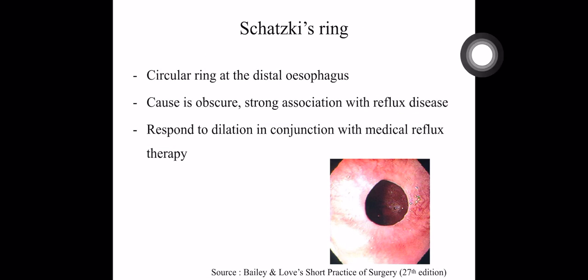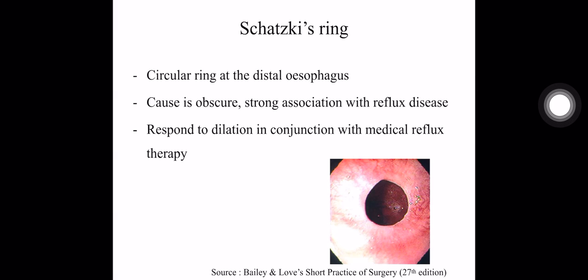The next one is Schatzki ring, which is a circular ring in the distal esophagus. It has a strong association with reflux disease, so you can use anti-reflux medical therapy. It also responds well to dilatation by endoscopy.